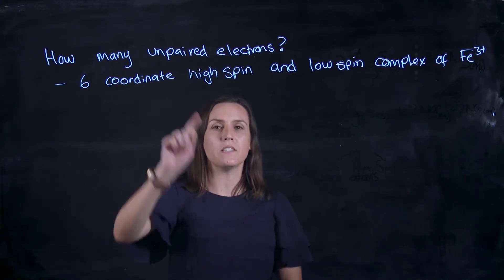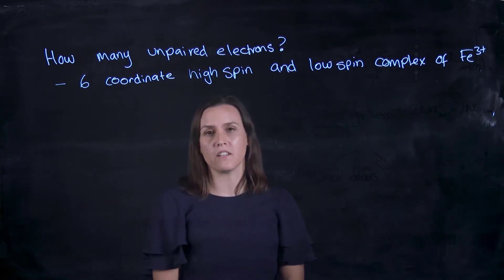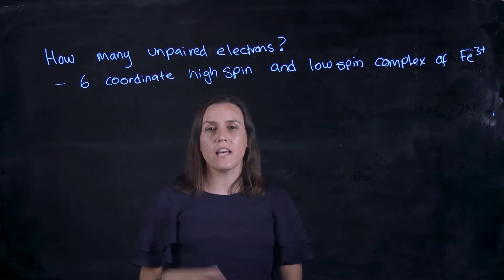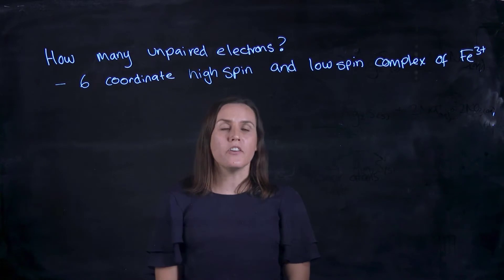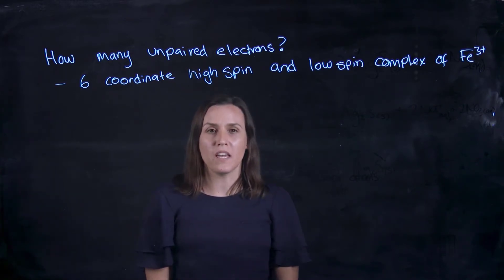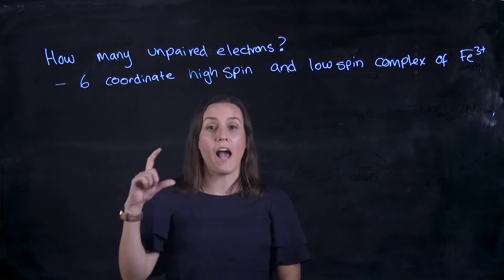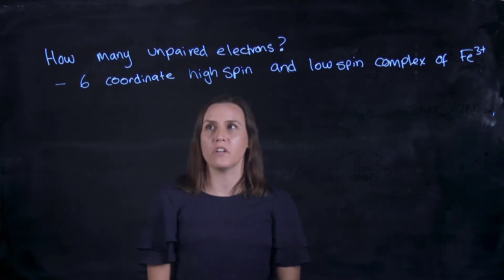Remember, high spin is when we have the maximum amount of unpaired electrons, so that's when we have a very small energy gap. And low spin is when we have the lowest number of unpaired electrons, so we have a high energy gap between them when we're drawing out our energy diagrams.